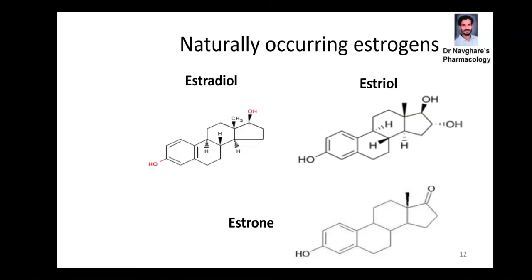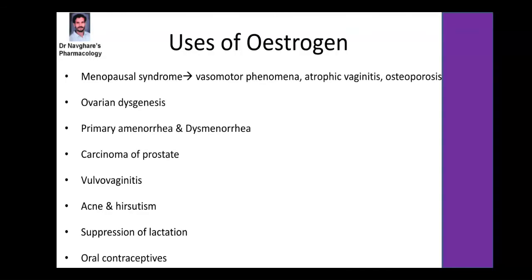The naturally occurring estrogens are estradiol, estriol, and estrone. Based upon the actions of estrogen, it is used in menopausal syndromes, ovarian dysgenesis, primary amenorrhea, and dysmenorrhea conditions. It also possesses antiandrogenic effects and is used in management of prostate cancer, vulvovaginitis, acne and hirsutism, suppression of lactation, and as an oral contraceptive agent.